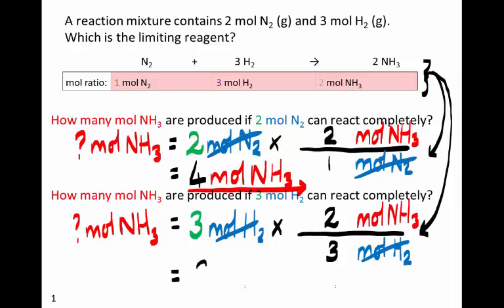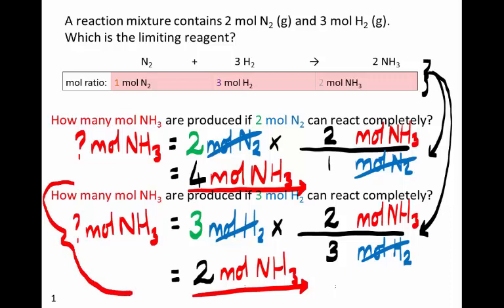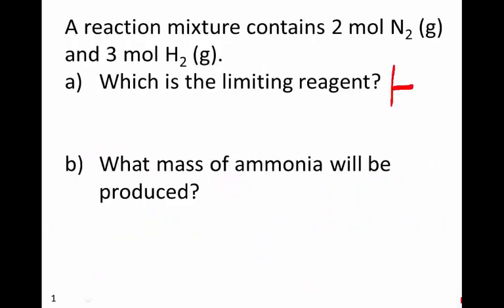But we'll only get 2 moles of ammonia if all of the hydrogen is used up. And the limiting reagent is the one that produces less. 2 moles is less than 4 moles of course. And so that tells us that it's hydrogen that's the limiting reagent in this particular situation. So we've answered our question about which is the limiting reagent.